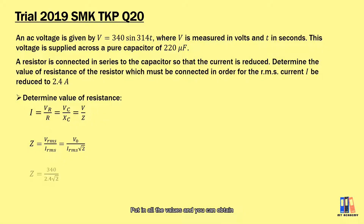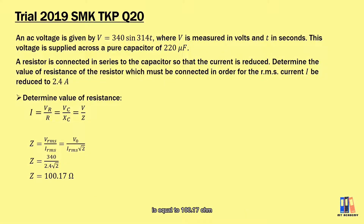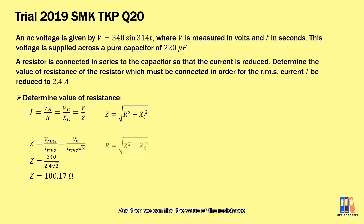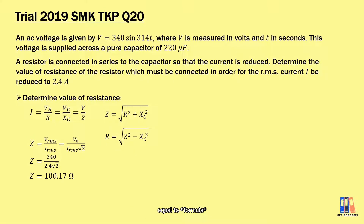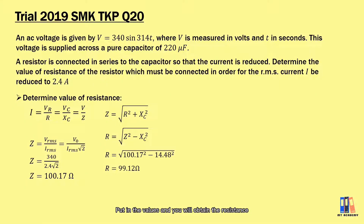Putting in all the values, you can obtain the impedance as 100.17 ohms. Then we can find the value of the resistance by using the formula Z = √(R² + XC²). Substituting the values gives the resistance as 99.12 ohms.